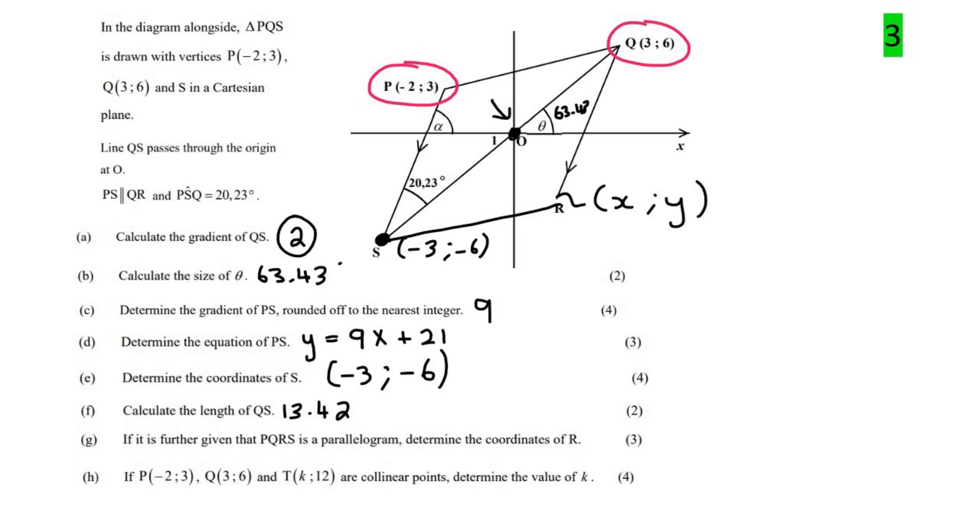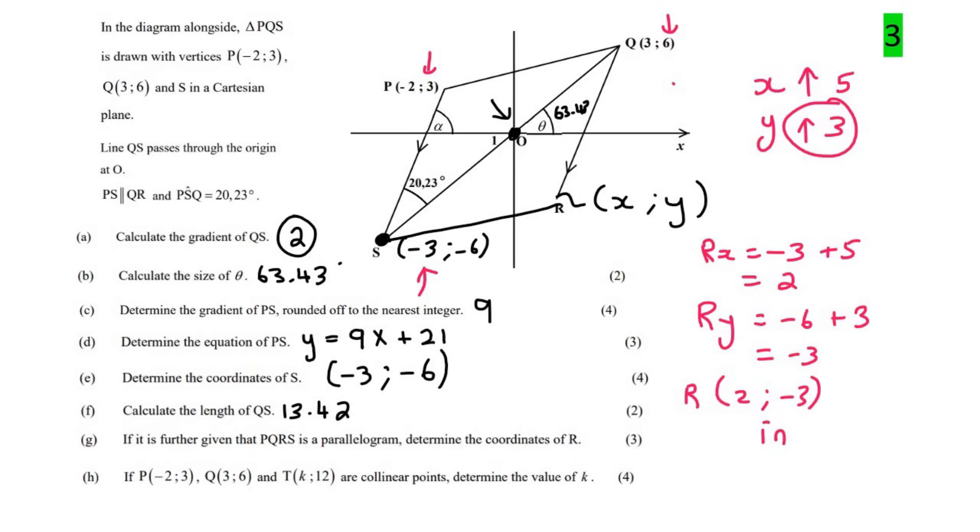Can you see that the x value goes from minus 2 and it goes up to 3. So how much does the x value increase by? It increases by 5. So the x value increases by 5. If you look at the y values, the y values go from 3 to 6. So the y value increases by 3. It is going to do the exact same when you go from S to R. So to find the R x value, you're just going to say minus 3, which is this one, and then you're just going to increase it by 5. So you're going to say plus 5, and so that's going to be 2. And then to find the R y value, you're just going to say minus 6, and then you're going to increase that by 3, and that will give you negative 3. And so the coordinates of R must be 2 and negative 3, and your reason is called inspection. We solve that by inspection.